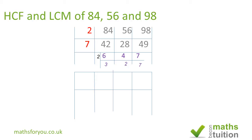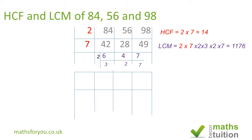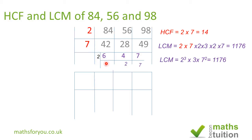So our highest common factor — GCF or HCF — is 2 times 7, which is 14. Our lowest common multiple is taken from the left column, so our LCM becomes 2 times 7 times 2.